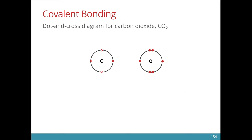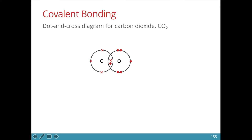Let's try another example: carbon dioxide. Carbon dioxide is a molecule formed between carbon and oxygen. Its molecular formula is CO₂, meaning we need one carbon atom and two oxygen atoms. Carbon needs four more electrons and oxygen needs two. If carbon and oxygen were to form only one single bond, oxygen would not be happy because it would have only seven electrons. As such, oxygen would need to form a double bond with carbon in order to satisfy the outermost shell of eight electrons.